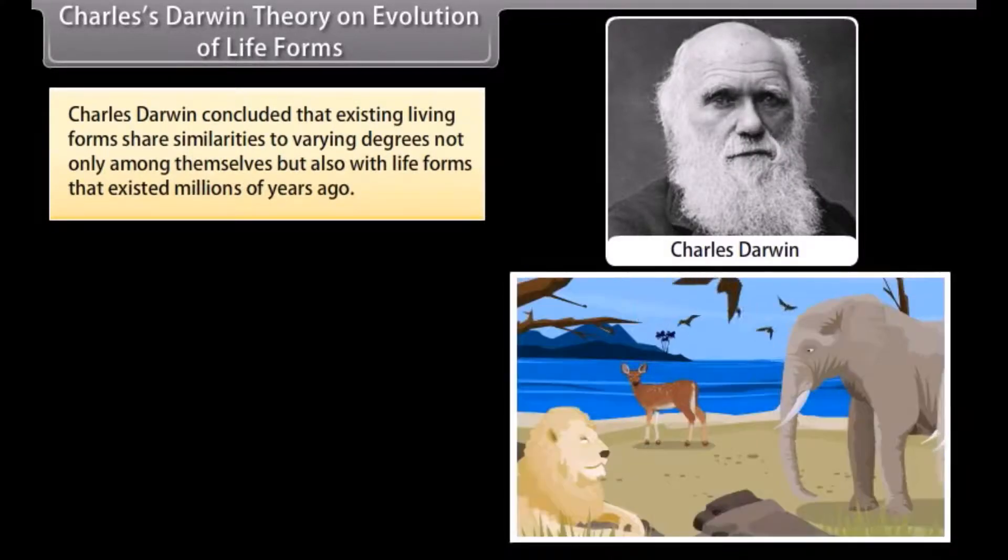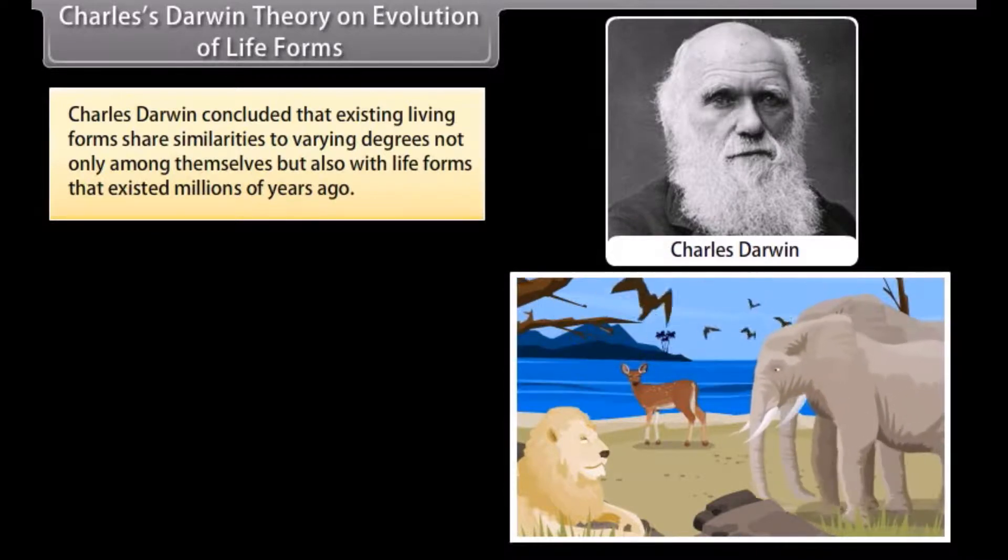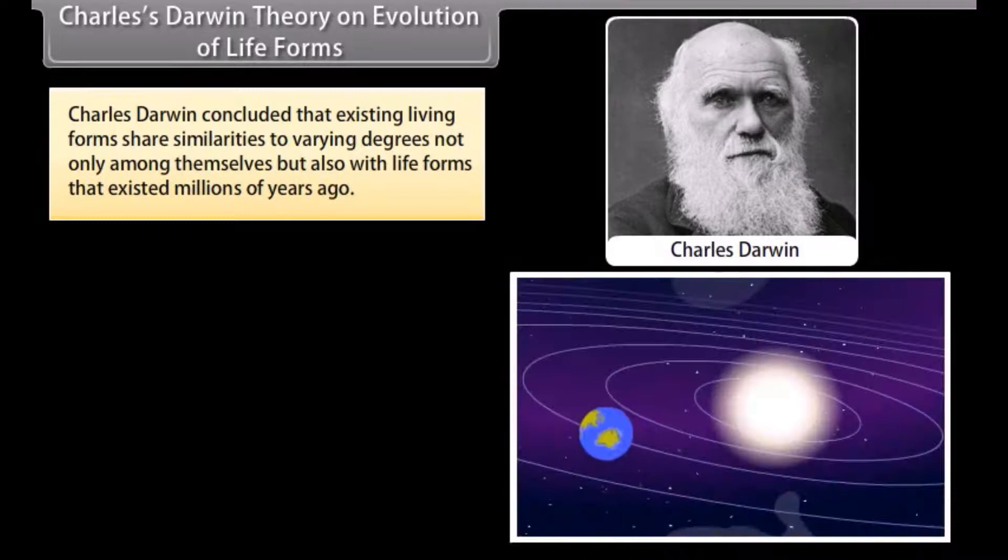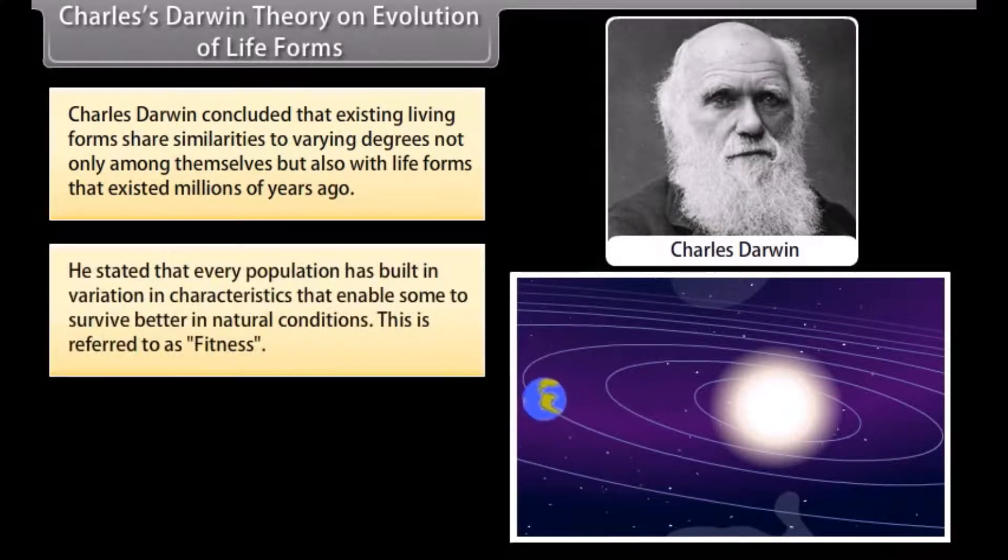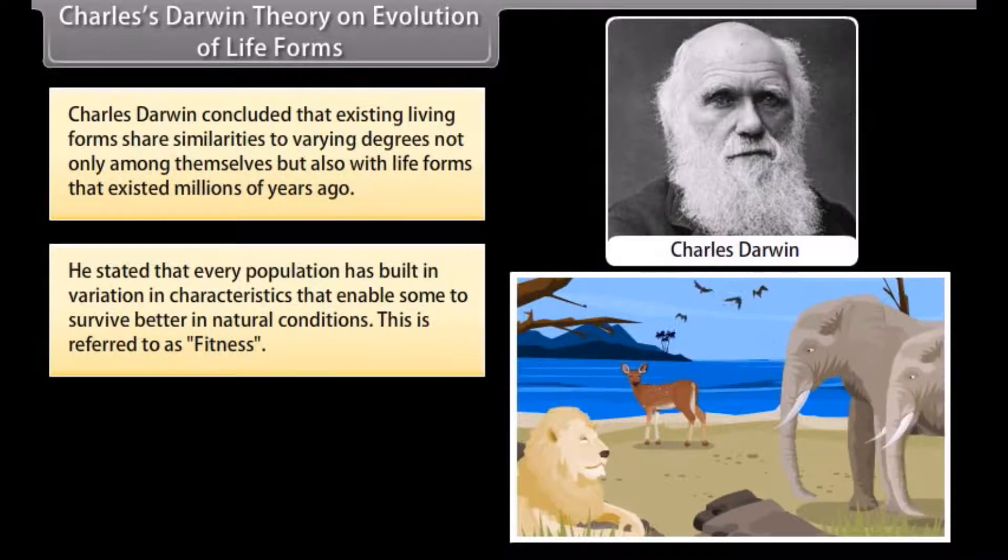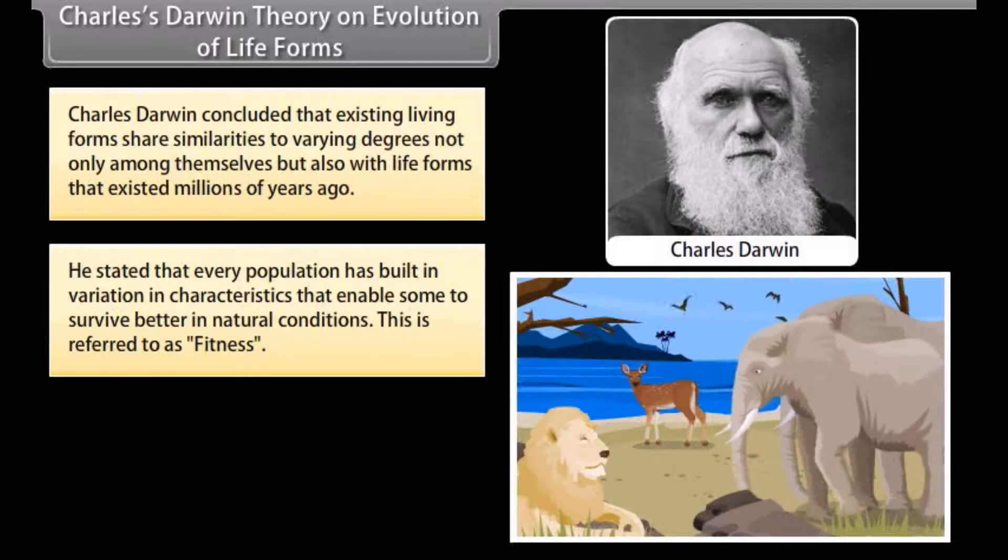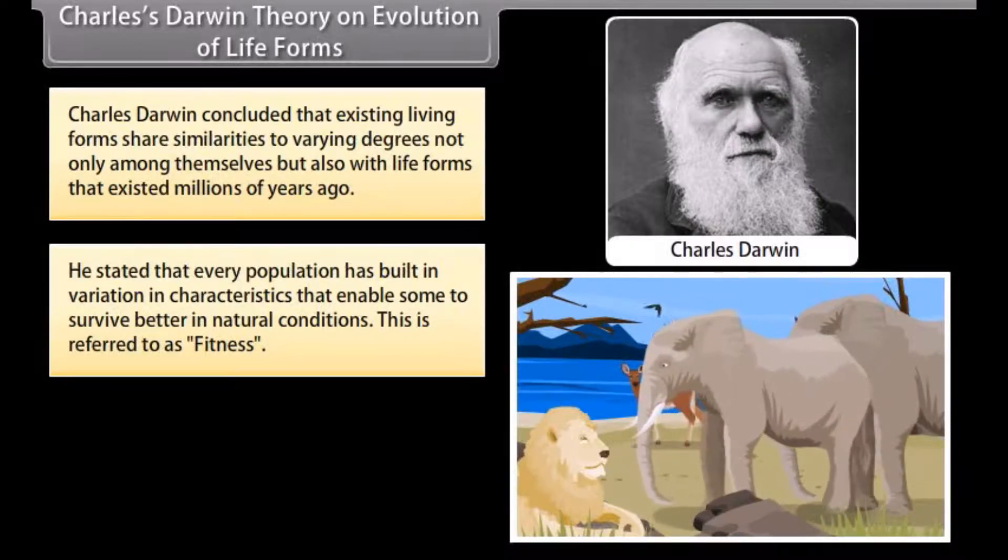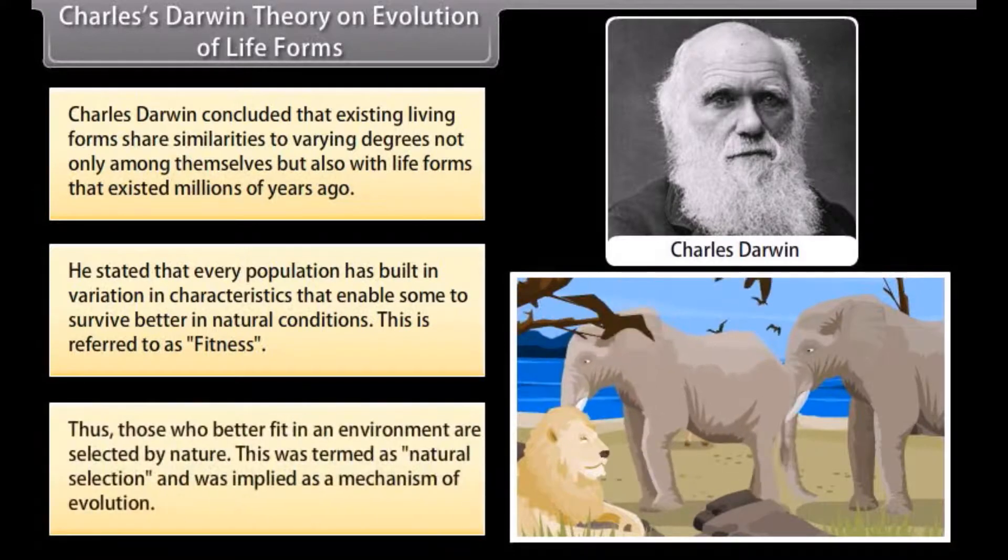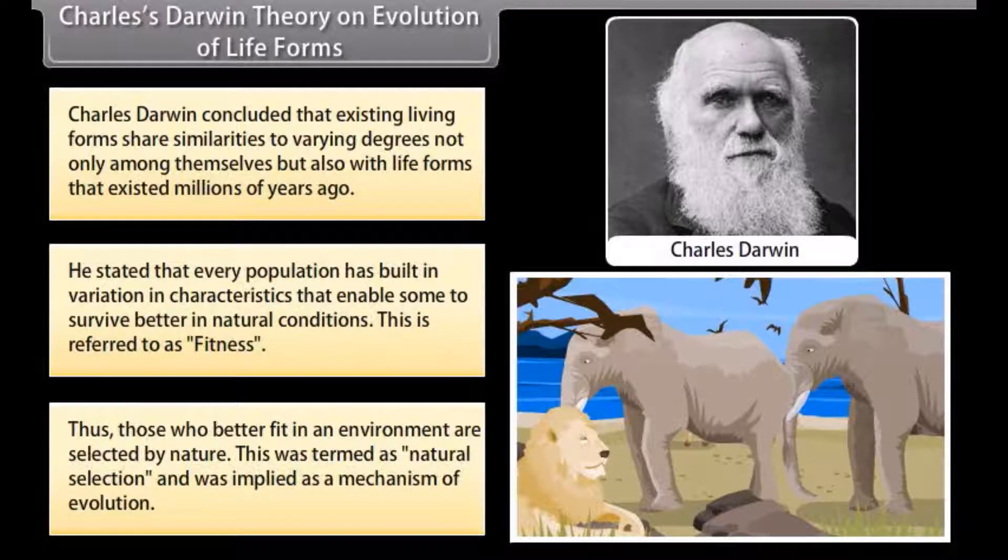Charles Darwin theory on evolution of life forms. Charles Darwin concluded that existing living forms share similarities to varying degrees, not only among themselves but also with life forms that existed millions of years ago. He stated that every population has built-in variation in characteristics that enabled some to survive better in natural conditions. This is referred to as fitness. Thus, those who better fit in an environment are selected by nature. This was termed as natural selection and was implied as a mechanism of evolution.